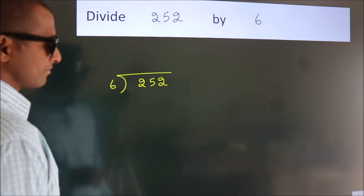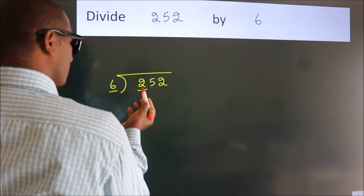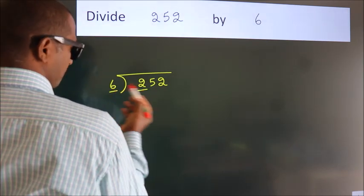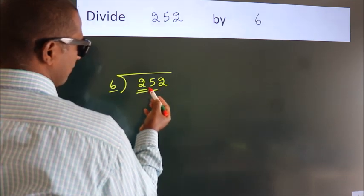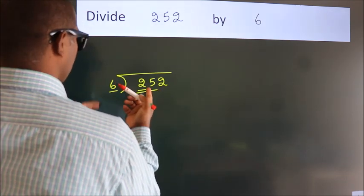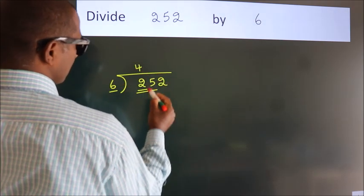Next, here we have 2. Here 6. 2 is smaller than 6, so we should take 2 numbers: 25. A number close to 25 in the 6 table is 6 times 4 equals 24.